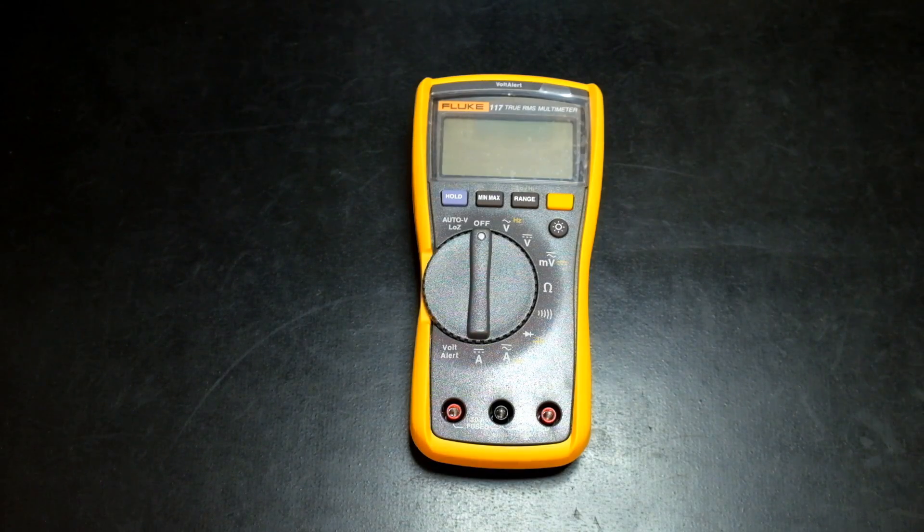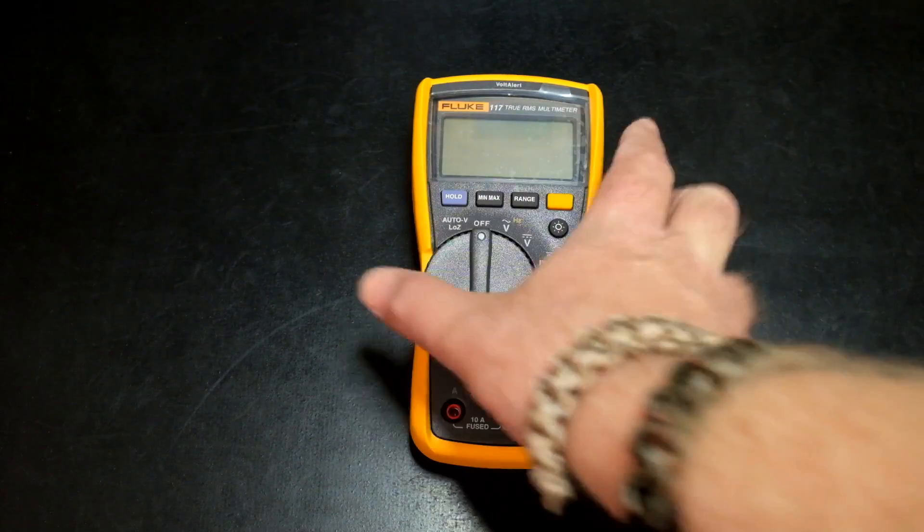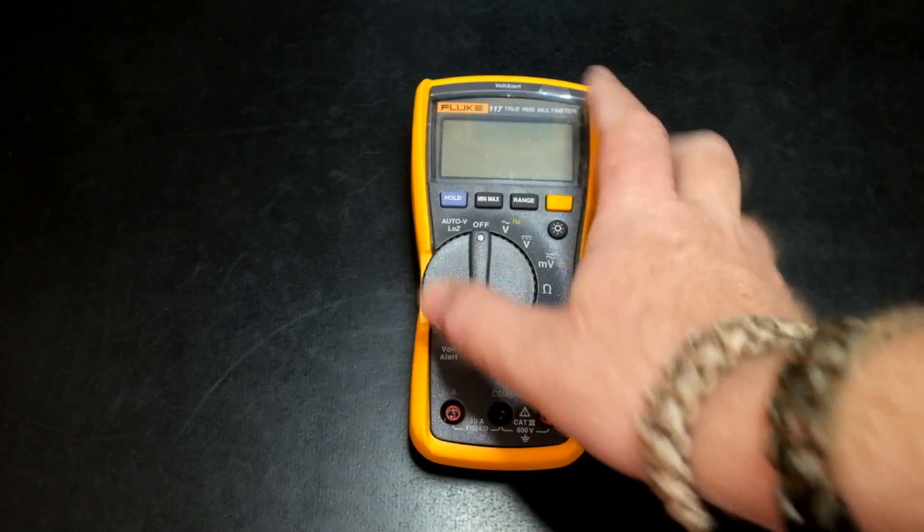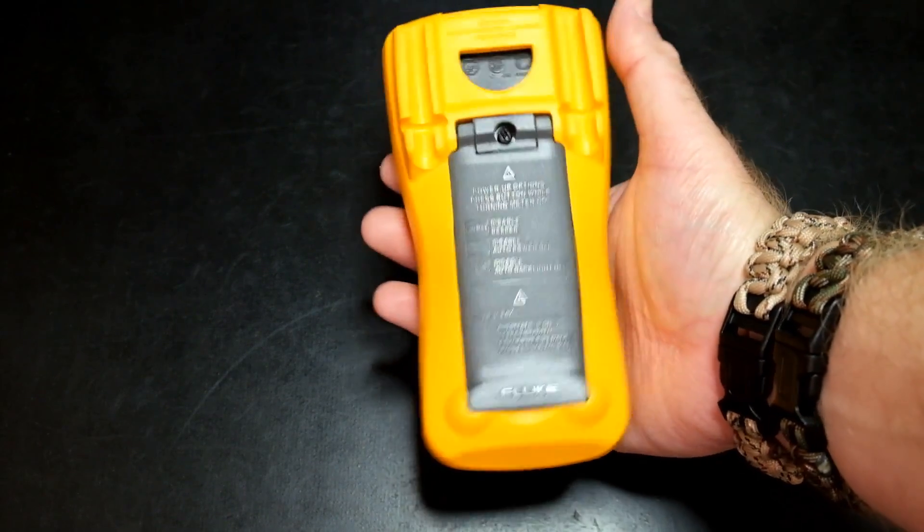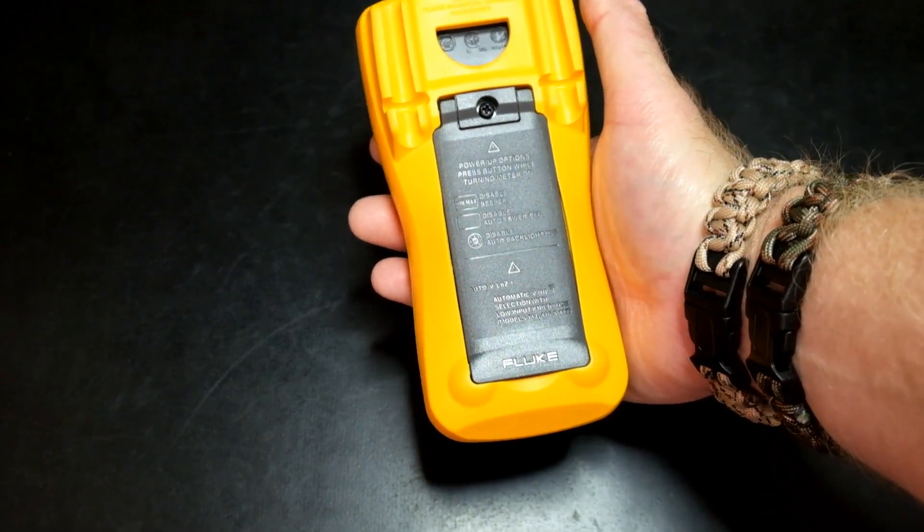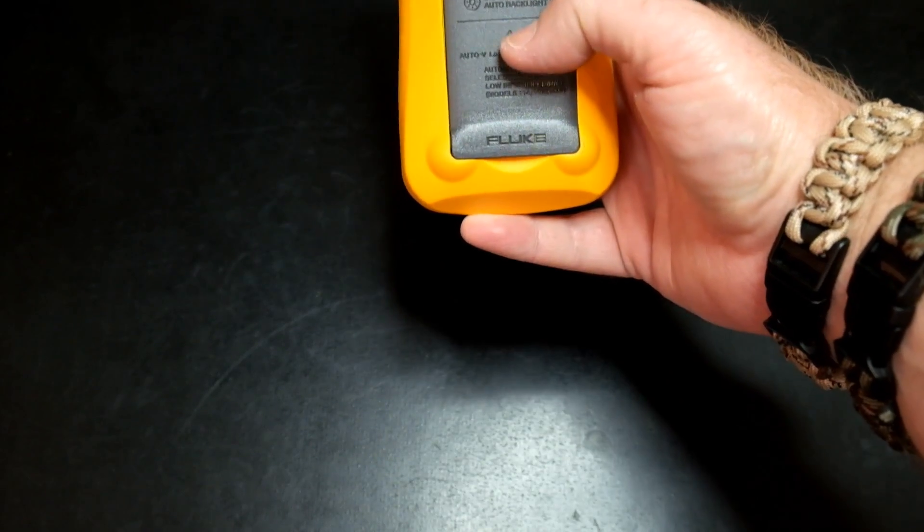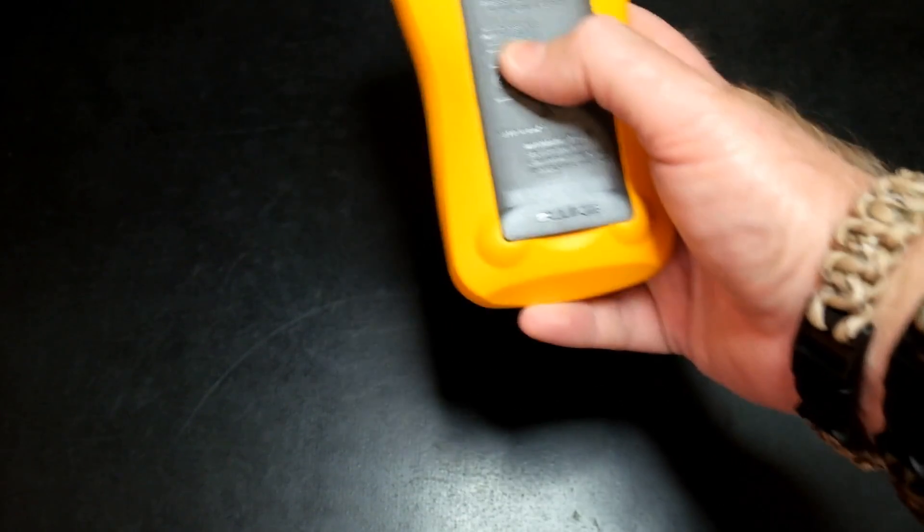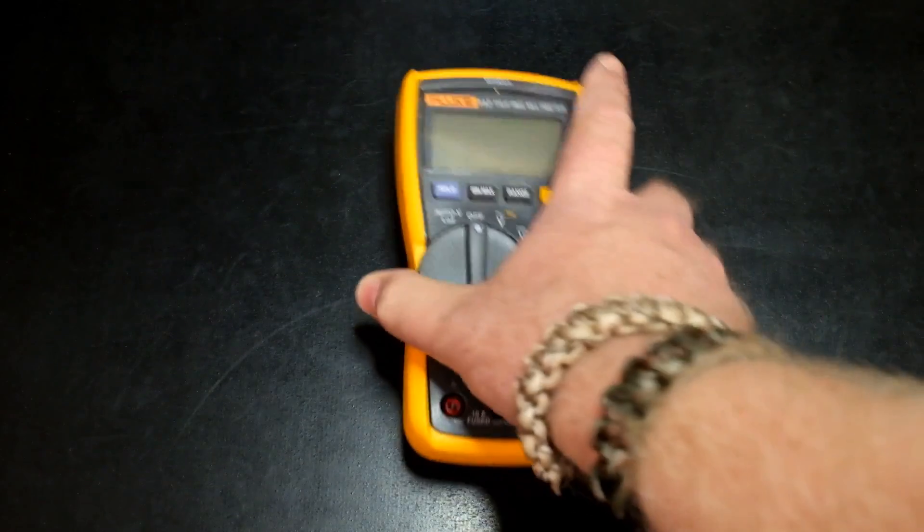Okay first things first with the Fluke 117. The feel of the meter is very good. It has a nice solid rubber casing despite it being so thin. There are nice sort of probe holders at the back. The information about the start up being on the back is really cool. So you've got power up options.